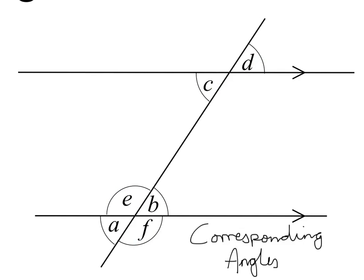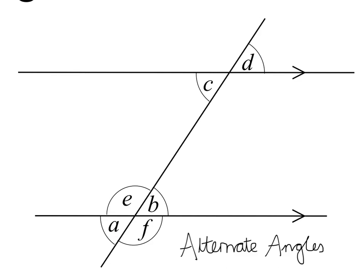Corresponding angles are also the same as one another. A is corresponding to C and D is corresponding to B. So A equals C, B equals D. Alternate angles are also the same as one another. B is an alternate angle to C but both are the same as one another.